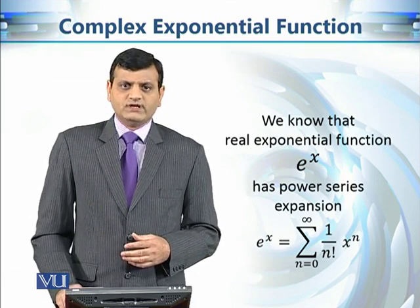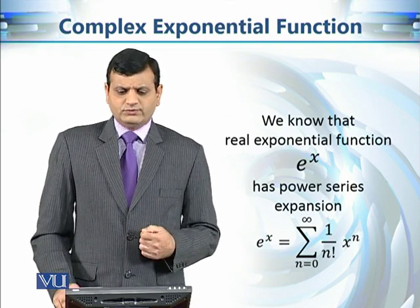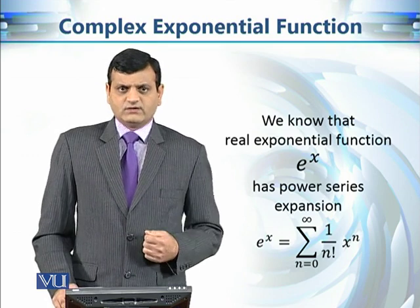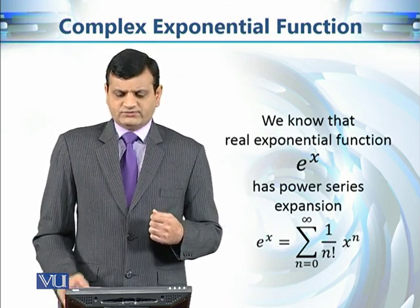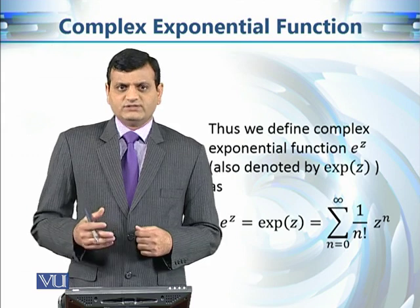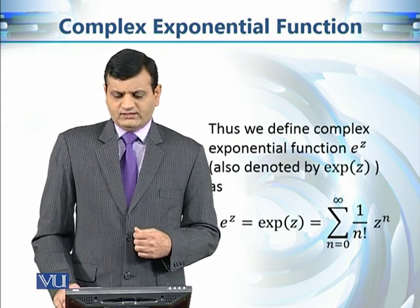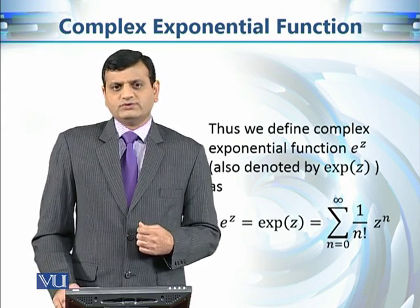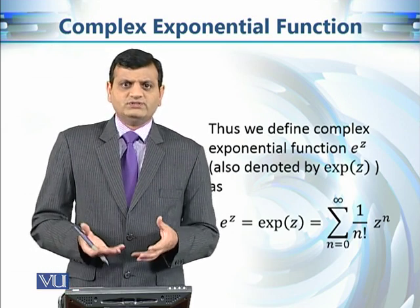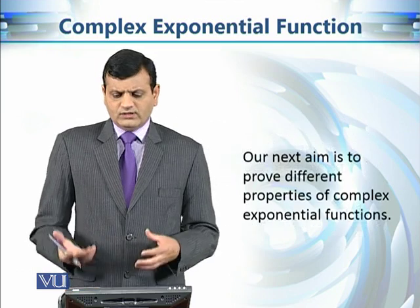According to our strategy, to construct e^z where z is a complex variable, we simply replace x with z to get e^z = Σ (1/n!) zⁿ, n = 0 to infinity. This is the complex exponential function.